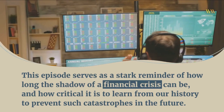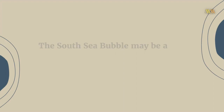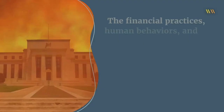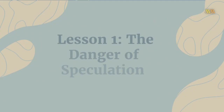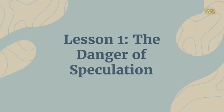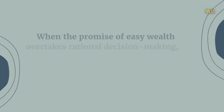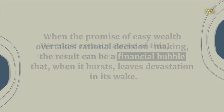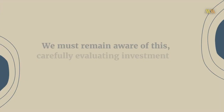The South Sea Bubble may be a historical event, but it holds critical lessons for us today. The financial practices, human behaviors, and governmental responses involved offer timeless insights. Lesson 1 — The Danger of Speculation: The South Sea Bubble is a stark reminder of the dangers of speculation. When the promise of easy wealth overtakes rational decision-making, the result can be a financial bubble that, when it bursts, leaves devastation in its wake. We must remain aware of this, carefully evaluating investment opportunities and the risks they pose.